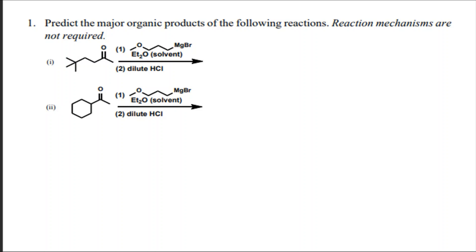Reaction mechanisms are not required. When you look at this reagent that is reacting here, this reagent is a ketone — it's a ketone because you've got a carbon that is double bonded to an oxygen, and this carbon is not a terminal carbon. So this is a ketone.